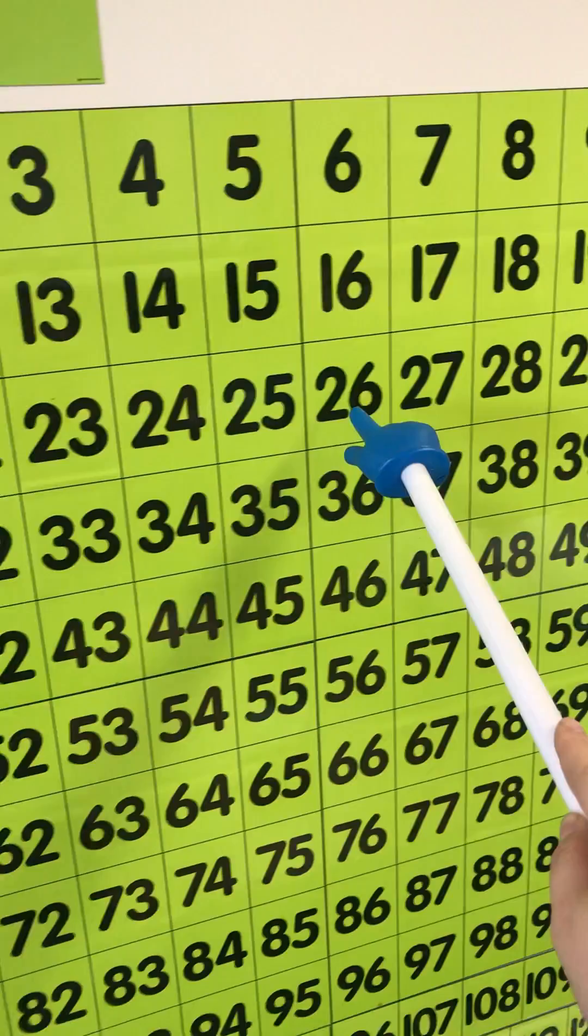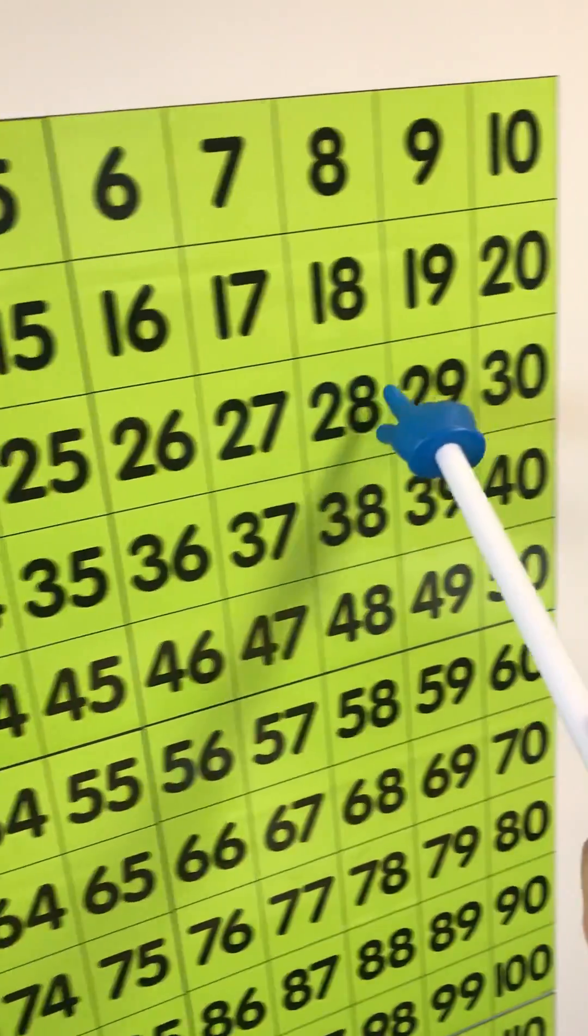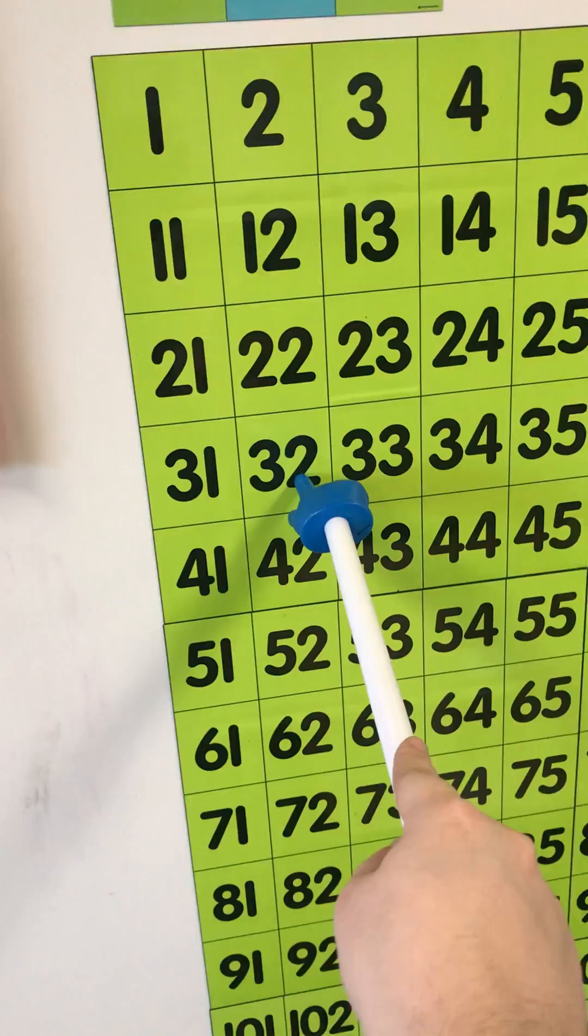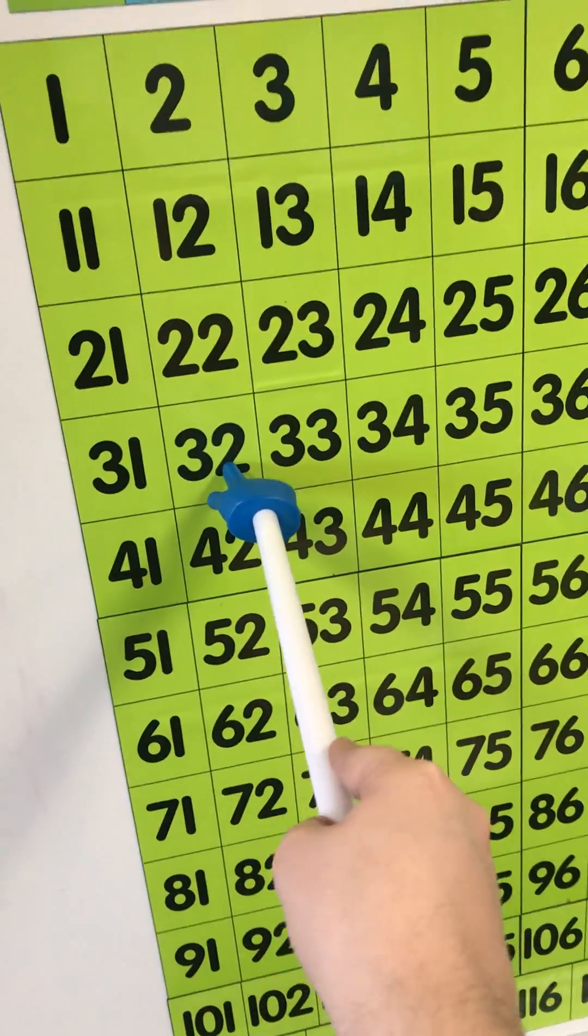I'm skipping 24, 26, 28, 30, 32. There's a pattern. My numbers are ending in 2, 4, 6, 8, or 0.